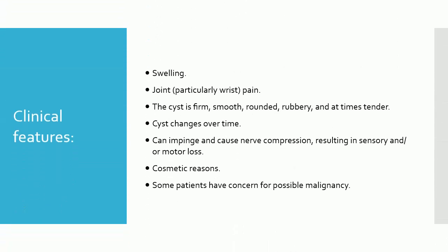Clinical Features: Ganglia may present as an obvious swelling on physical examination or may only be manifested by joint, particularly wrist, pain. The cyst is typically firm, smooth, rounded, rubbery, and at times tender. Patients may notice that the size of the cyst changes over time. Occasionally, the cyst can impinge and cause nerve compression, resulting in sensory and/or motor loss.